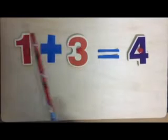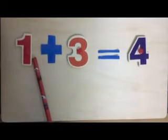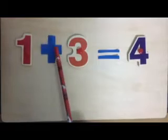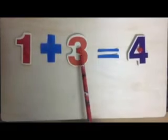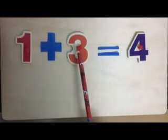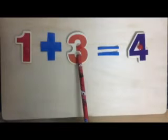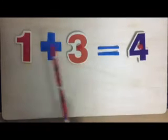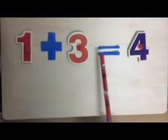Now we are going to add this one plus, or add three to the one. Now let's count and see what is the answer or the result of the sum. That means one plus three. One plus three is equal to four.